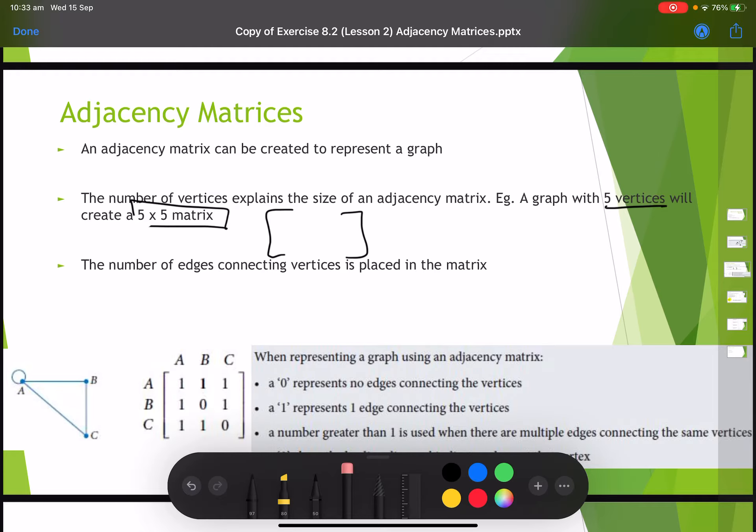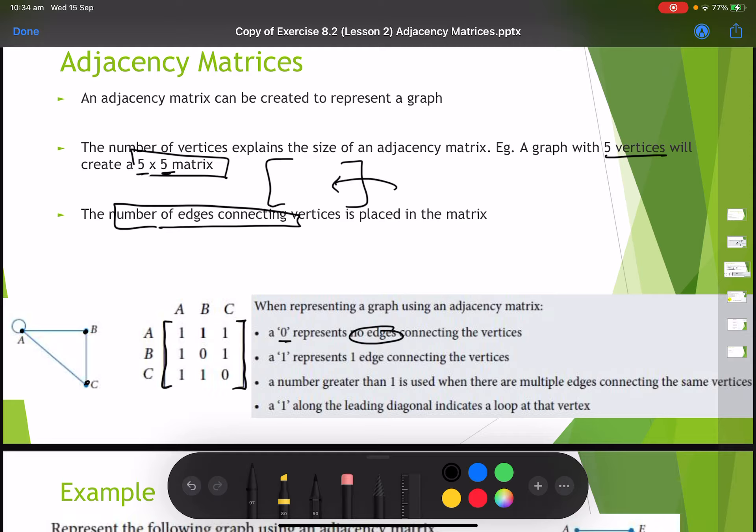I have given you this graph where I have vertex a, b and c. There are three vertices, therefore it's going to be a three by three graph matrix. When we represent a graph in an adjacency matrix, whenever we use the number zero we say that it has no edges connecting a vertex. We use the number one to say one edge connecting the vertex. A number greater than one is only used when there are multiple edges. A one along the leading diagonal indicates a loop in that vertex as well.